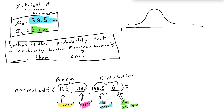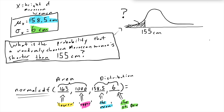Now let's look at the last kind of question: what's the probability that a randomly chosen Moroccan woman is shorter than 155 centimeters? The answer is the area to the left of that number. We're thinking about using normalCDF again, because the key word is that we're looking for a probability — or we could be asked for a proportion. If the variable is normally distributed, normalCDF is the key to finding those proportions or probabilities.